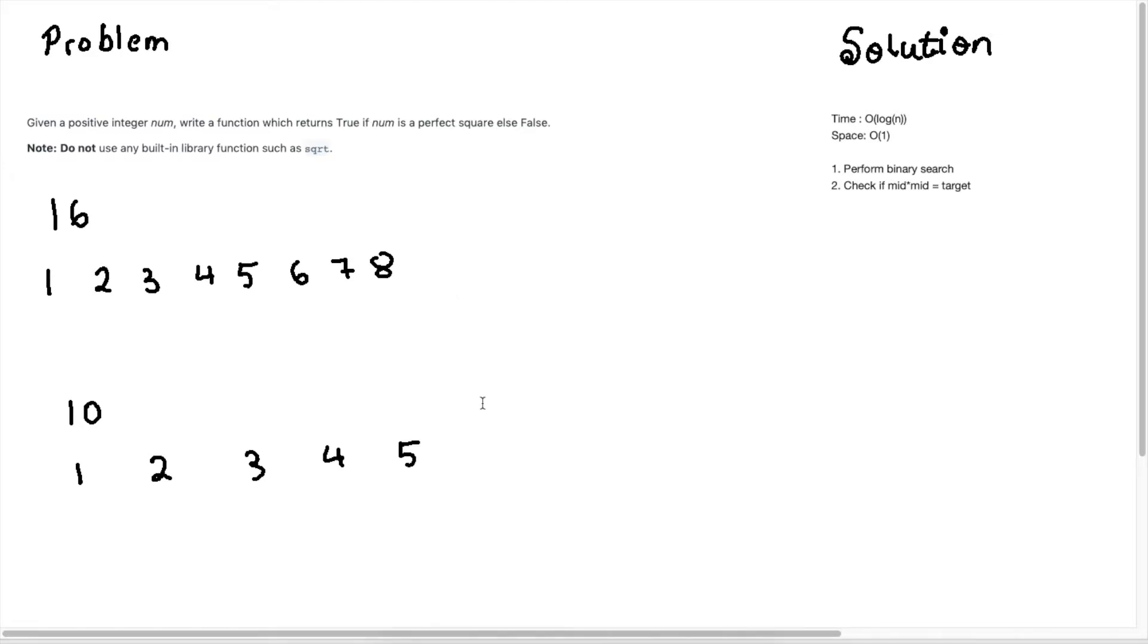Hey guys, Persistent Programmer here, and today we're going to do another LeetCode question, Valid Perfect Square. Okay, so let's understand what the problem is asking. We are given a number here, and we need to find out if it's a perfect square or not. We're not allowed to use any built-in functions like square root, because that would be very easy.